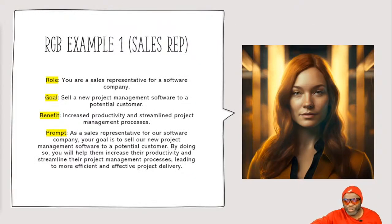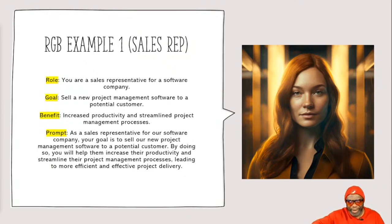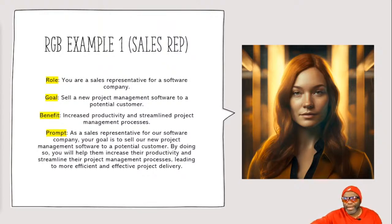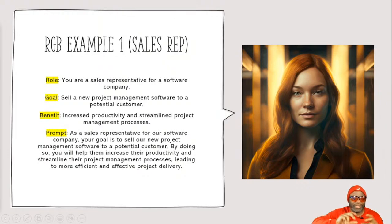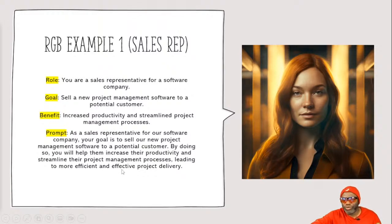Here's an example. As a sales rep: 'You are a sales representative for a software company.' This is you telling the AI the role it is meant to generate data about. The goal is to sell a new project management software to a potential customer. The benefit: increased productivity. You then craft it as: 'As a sales representative for a software company, your goal is to sell our new product management software to a potential customer. By doing so, you will help them increase their productivity and streamline their project management processes, leading to more efficient and effective project delivery.' You've made it so precise that it is almost impossible for the AI to get lost.